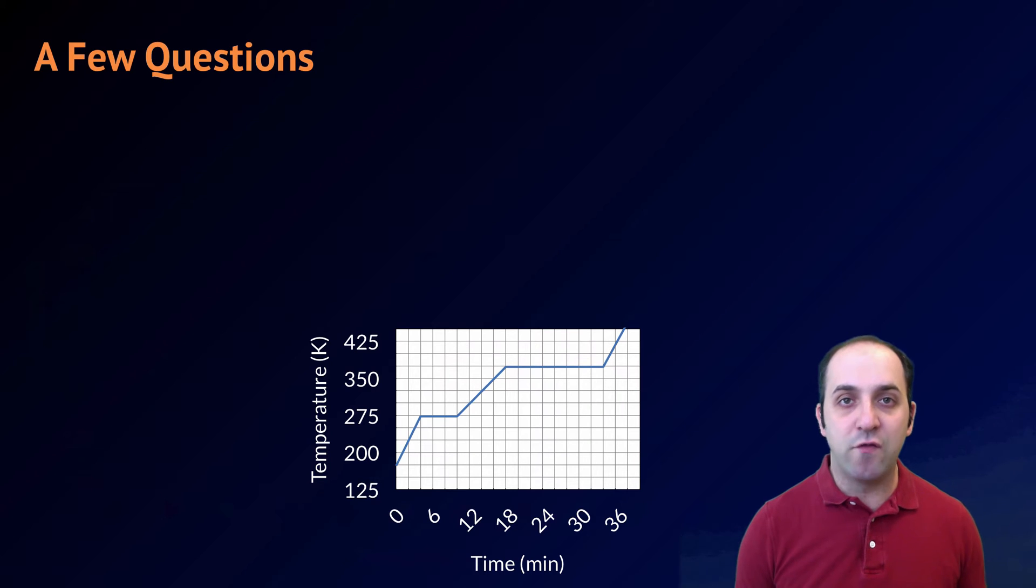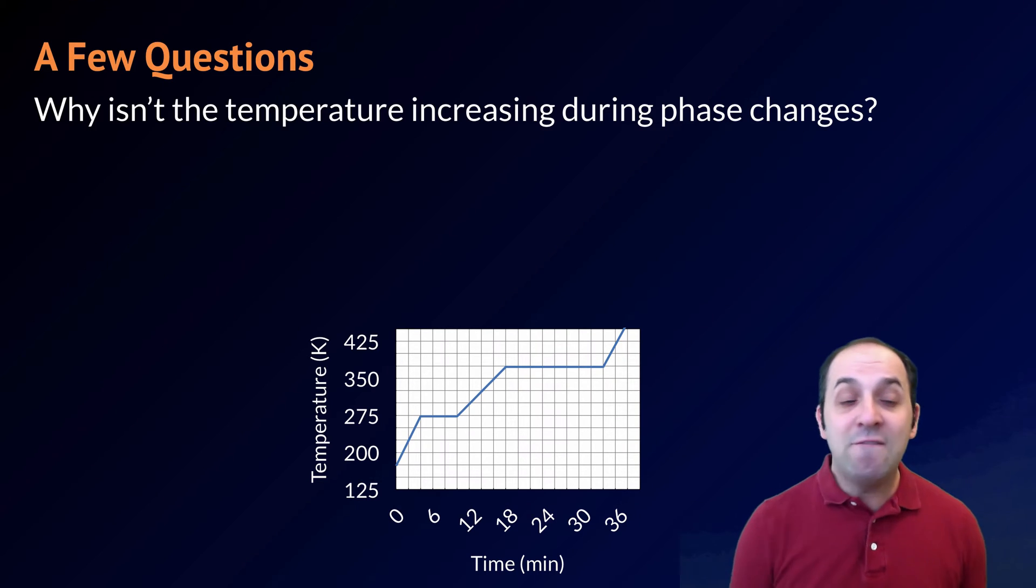I have a few questions about heating curves that I'd like you to try to answer on your own. We'll discuss the answers to these questions either in the comments below this video, or you can always bring them into class. My first question is, why isn't the temperature changing during phase changes? Remember that we're adding heat, in the case of this heating curve, at a constant rate. So how come our temperature no longer changes when we get to those phase change points? Why does it flat line?